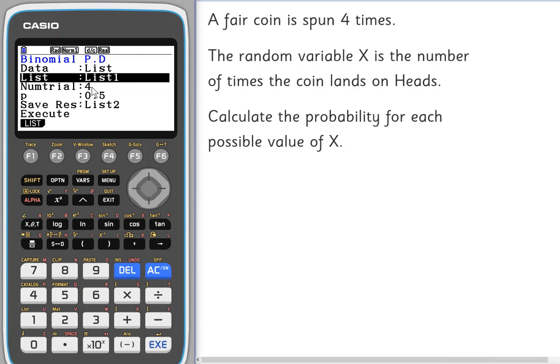We then have the information about the distribution. The number of trials is four and the probability of success, well it's a fair coin, so the probability of success is 0.5. You're going to save the results in list two, next to where you've got the results for list one.